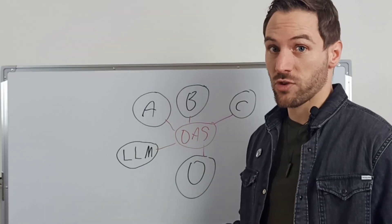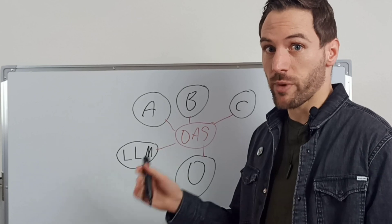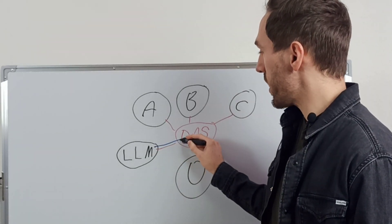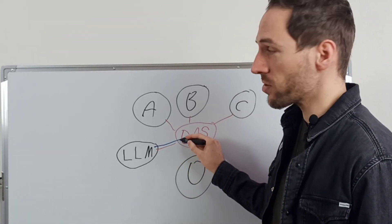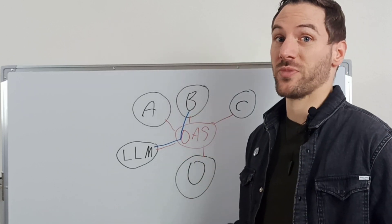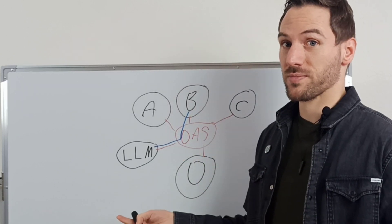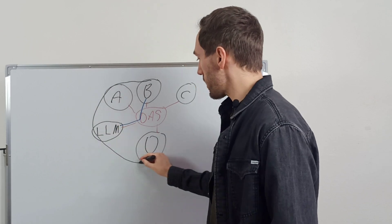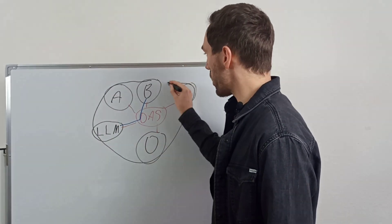So if one part needs specific information, it talks to the DAS, and the DAS connects it with the part that has the information it needs. And all of this is basically Hyperron's brain.